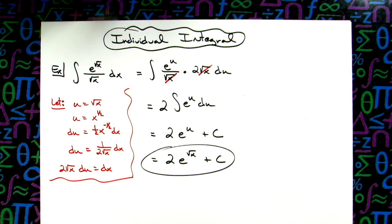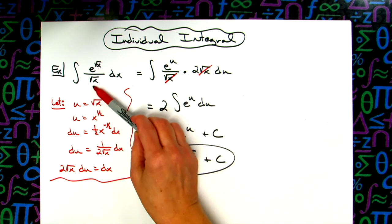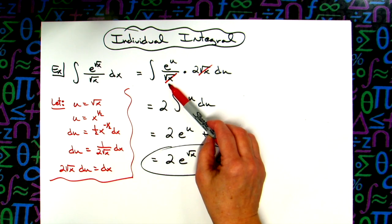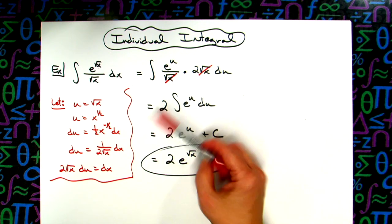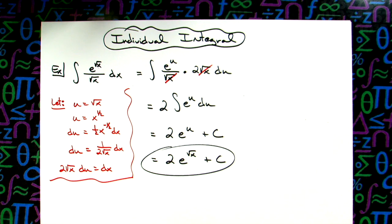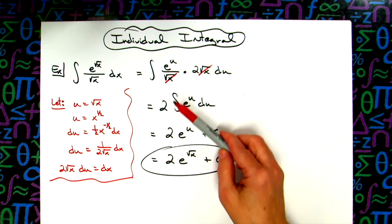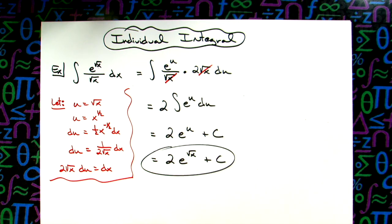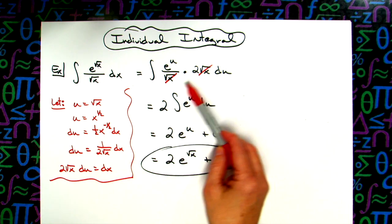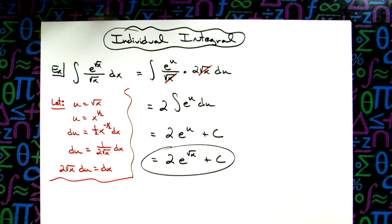So definitely just a straightforward u-substitution integral, definitely one that would be seen in a Calc 1 class. What can create a problem is if you go ahead and substitute right away for everything, because some people might put a u back in there and be left with that. So just knowing when to leave things in, when to go ahead and substitute out, and being able to look ahead — knowing you needed to cancel that out — is why I chose to leave that in.